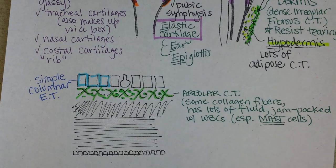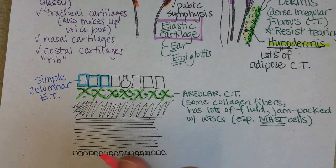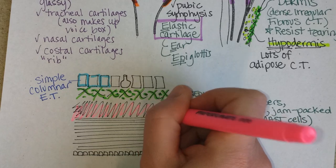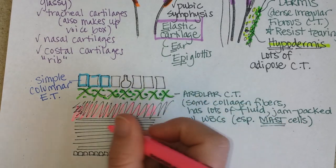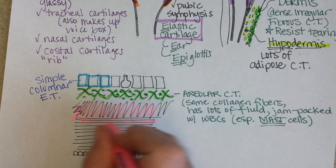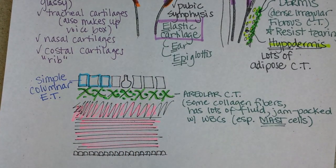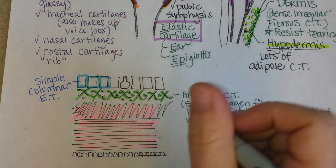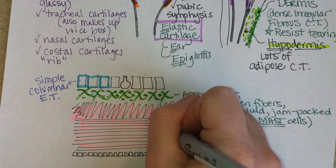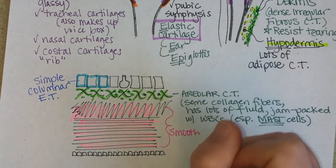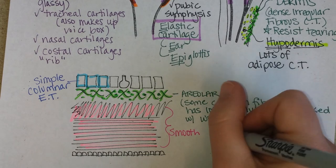As a sneak preview of what's to come: beneath the areolar connective tissue in your intestine is a lot of smooth muscle, and that's going to help move the foodstuffs through.